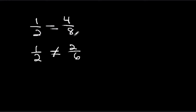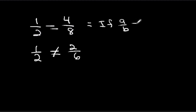To test whether two given ratios are proportional — that is, equal to each other — we use what's known as the property of proportions. The property of proportions simply states that the cross products are equal, and by cross products I mean cross multiplication. So if a over b equals c over d, that means a times d equals b times c.